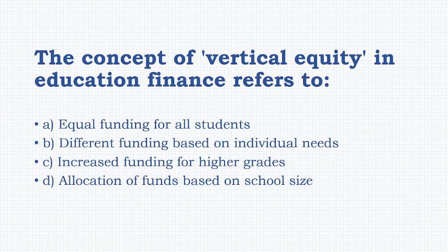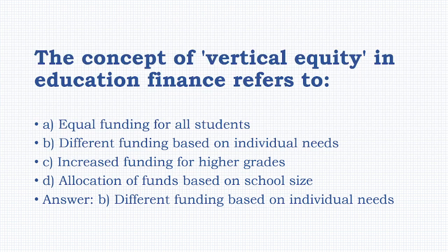The concept of vertical equity in education finance refers to: equal funding for all students, different funding based on individual needs, increased funding for higher grades, or allocation of funds based on school size. The answer is option B: different funding based on individual needs.